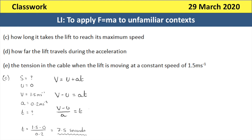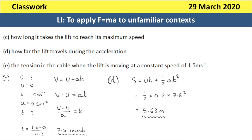Part D: how far will the lift travel during that acceleration? Using the same SUVAT values, I'll use S equals UT plus one-half AT squared. Since U is zero, this simplifies to one-half multiplied by 0.2 multiplied by 7.5 squared, giving an answer of 5.63 metres. Part E: the tension when the lift is moving at a constant speed of 1.5 metres per second. At constant speed, the resultant force is zero, so T equals mg — the same as part A, coming out rounded to approximately 14,715 newtons.